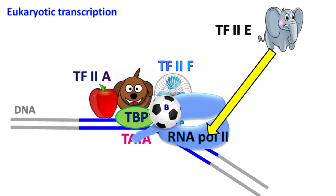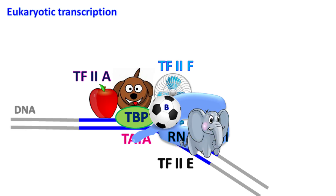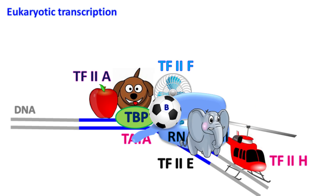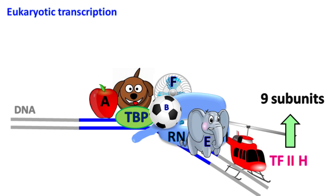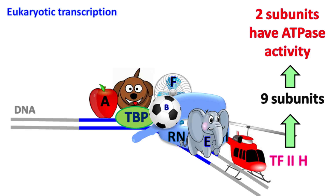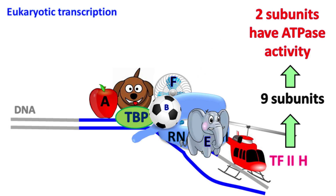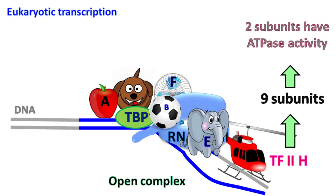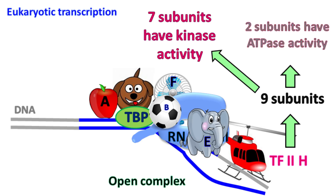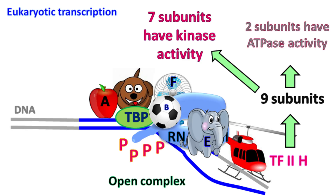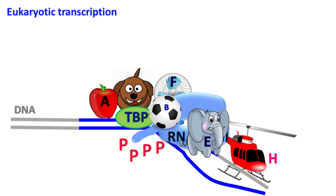Next, transcription factor TF2E binds the pre-initiation complex and helps in the binding of TF2H. TF2H is a very large complex with a total of 9 subunits. Two of these subunits have ATPase activity; using energy from ATP, TF2H acts like a helicase and melts the promoter, causing transition from the pre-initiation complex to the open complex. The remaining seven subunits of TF2H have kinase activity, which phosphorylates the C-terminal domain of RNA polymerase II, leading to promoter escape and transcription elongation.